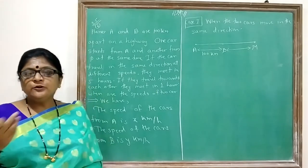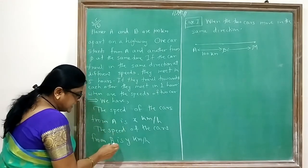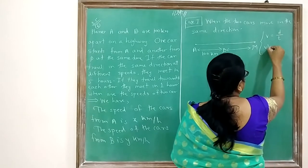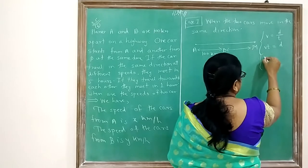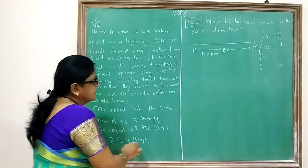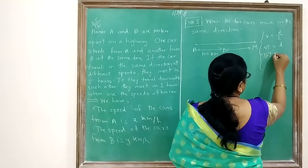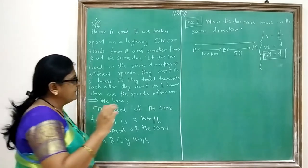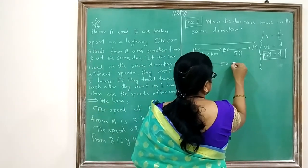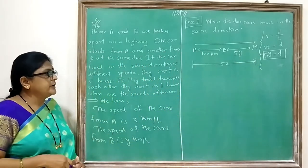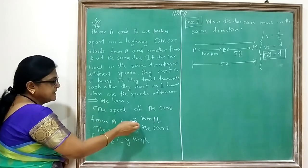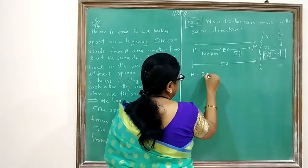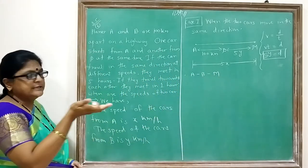The distance B to M is 5y, because car B's speed is Y km per hour and time is 5, so distance = Vt = 5y. The distance A to M is 5x, because car A's speed is X and time is 5. Since A, B, and M are collinear — they are moving in the same direction — AB + BM = AM.